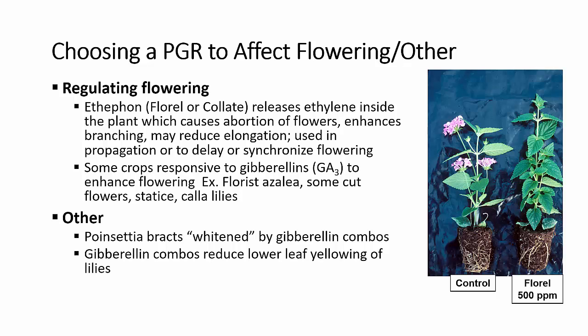Some crops are responsive to gibberellins to enhance flowering, such as florist azaleas where it may overcome partial dormancy, or some cut flowers such as statice or calla lilies. There are other applications of plant growth regulators such as using gibberellin combos to whiten the poinsettia bracts of white cultivars, and there are gibberellin combos used to reduce lower leaf yellowing on lilies.